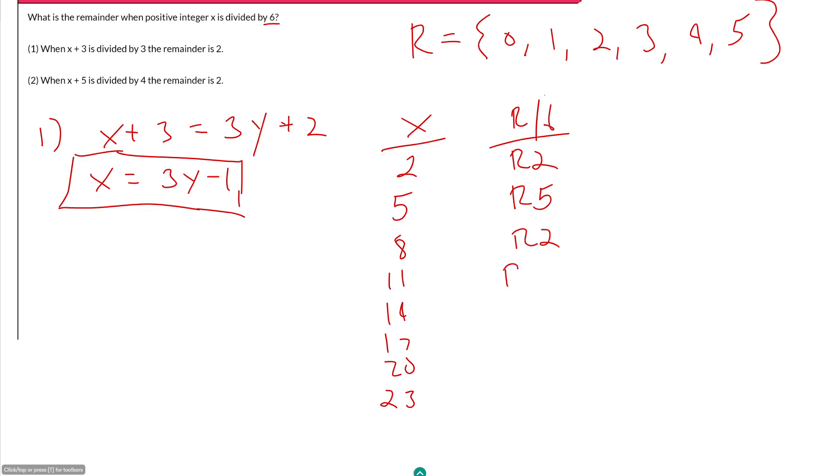11 would be 1 remainder 5. 14 over 6 would be 2 remainder 2. 17 over 6 would be 2 remainder 5. 20 over 6 would be 3 remainder 2. 23 over 6 would be 3 remainder 5.